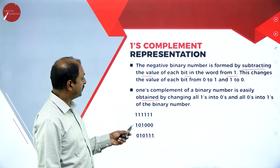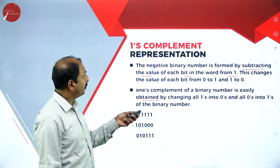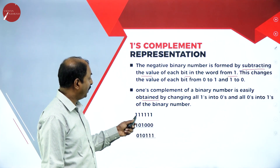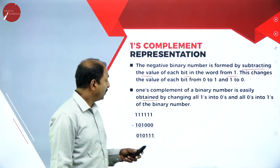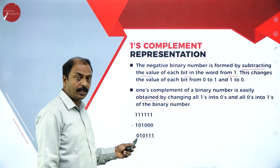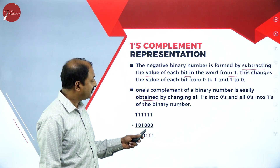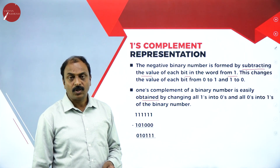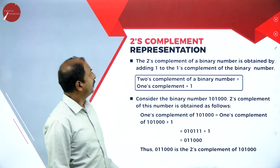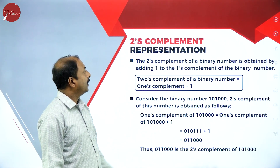Look at the example: the given number is 101000, a binary number. To represent the negative number, we subtract each bit from 1. Subtracting gives this result — observe that each 0 becomes 1 and each 1 becomes 0. This is one method of representing negative integers: one's complement representation.